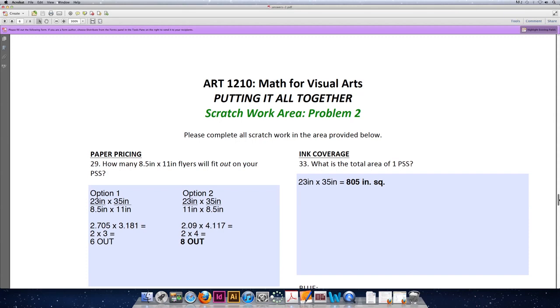Option one comes out to 2.705 by 3.181. We keep the whole numbers, so we'll multiply two times three to get six out on that sheet of paper. Option two comes out to 2.09 times 4.117. We'll keep the whole numbers and multiply two times four to come out with a total of eight out. Since eight is larger than six, we will say the total number out for question 29 is eight.